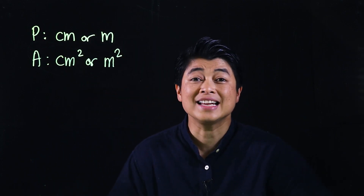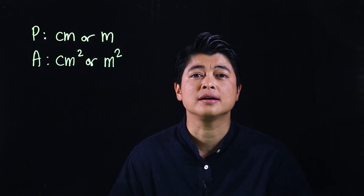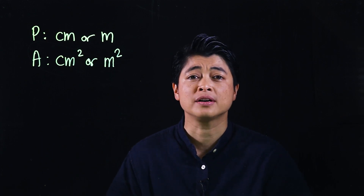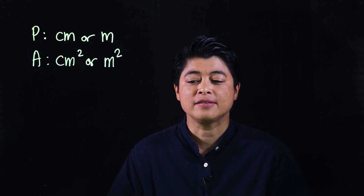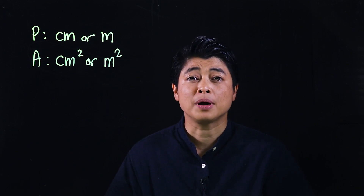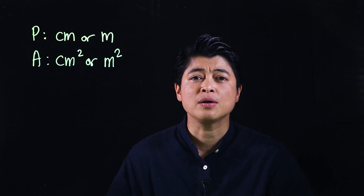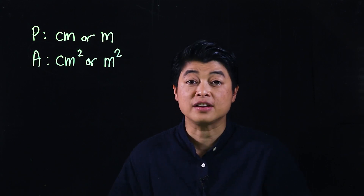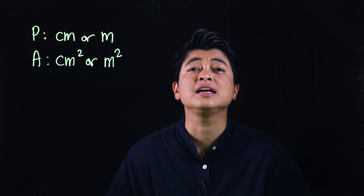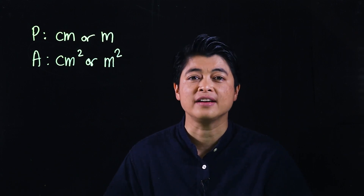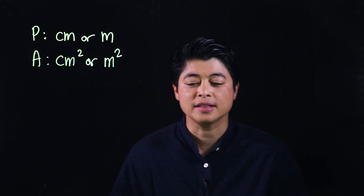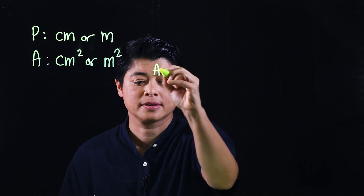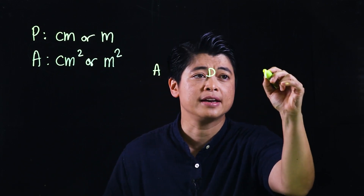For this lesson, the page number we will be working on is page 144. I've selected problem number one; however, I will not draw out all five figures — I will only draw out three of the five figures. These are figures A, D, and F.